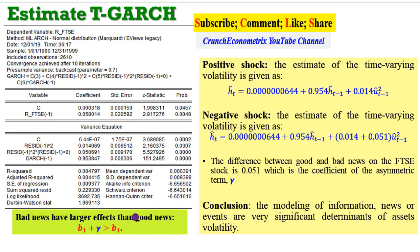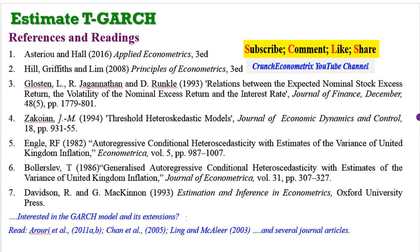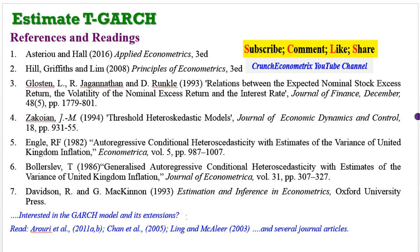In conclusion, the modeling of information, news, or events is a very significant determinant in asset volatility. Bad news has larger effects than good news — you can clearly see that beta_1 plus gamma is greater than beta_1. Gamma, the coefficient of asymmetry, makes a huge impact on the behavior of this series. Modeling information or events gives an investor or speculator much more information about the behavior of a series than when a simple or basic GARCH model is estimated. Video tutorials are not sufficient alone — please engage with one or two papers from the references listed for a deeper understanding of GARCH models.